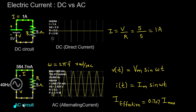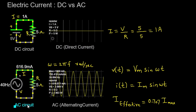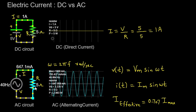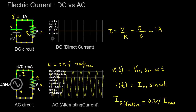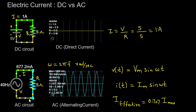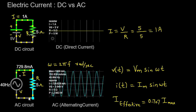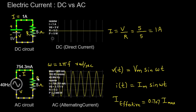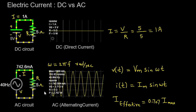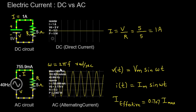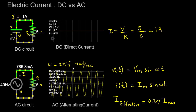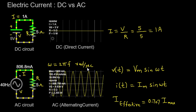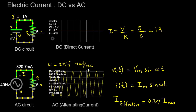Now, let's shift our focus to an AC circuit. In this instance, we have a 5-volt AC voltage source with a frequency of 40 Hz connected in series with the same 5-ohm resistor. Unlike DC, where the current flows consistently in one direction, AC current oscillates back and forth in a cyclic manner, continually altering its direction. The angular frequency ω is defined as 2π multiplied by the frequency F. In our case, ω = 2π × 40 = 80π radians per second.